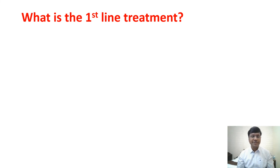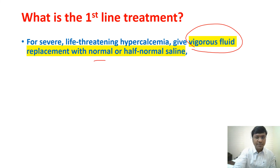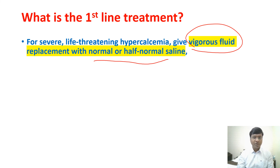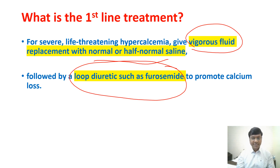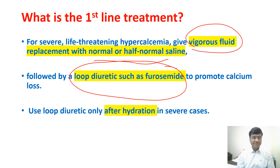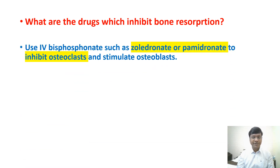For severe, life-threatening hypercalcemia, the main aim is to flush out calcium. First-line treatment is vigorous fluid replacement with normal or half-normal saline, followed by a loop diuretic such as furosemide to promote calcium loss. Since hypercalcemia often results from bone resorption, bisphosphonates such as zoledronate or pamidronate are given to inhibit osteoclasts and stimulate osteoblasts, thereby inhibiting bone resorption.